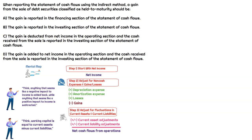When we record gains under US GAAP in the income statement, that doesn't necessarily reflect the cash that's received. That's just the difference between the cash received and the cost basis. So that gain isn't really representative of cash flow. Our treatment for the gain is actually to subtract it out of the operating section.